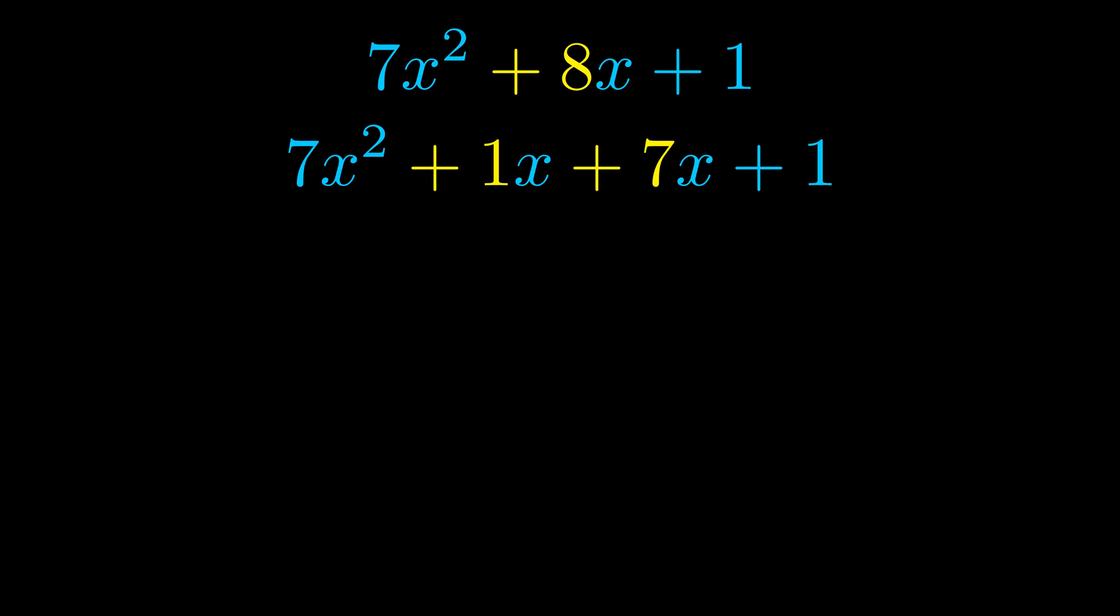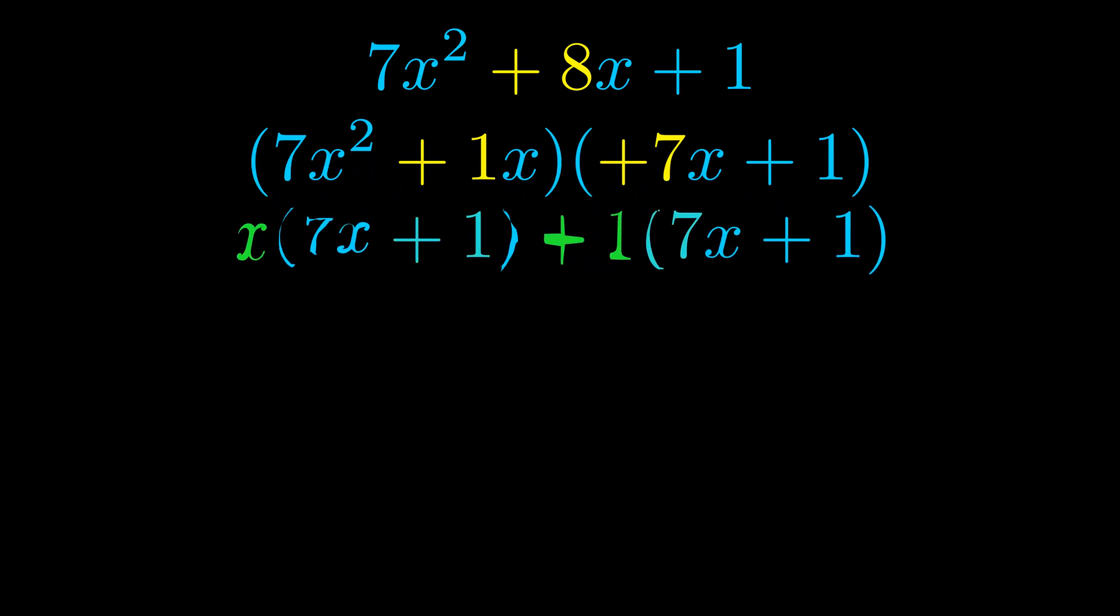Once we've done this, we go ahead and we put parentheses around the first term and the last term. And we do that so that we can take the greatest common factor out of both terms. We can see the greatest common factor is now outside in green. Notice also how what remains inside of the parentheses is the same in both cases.